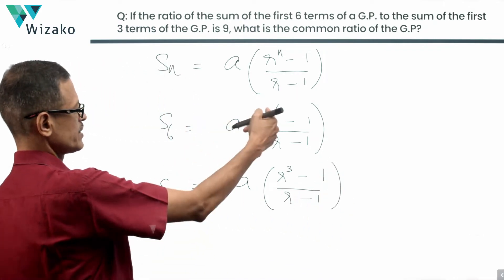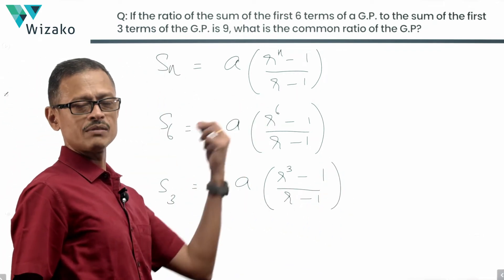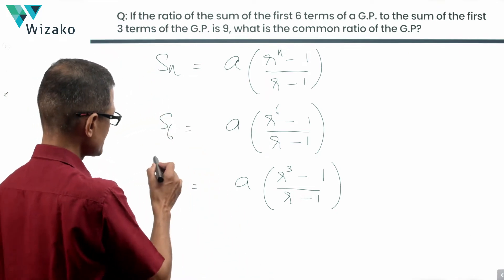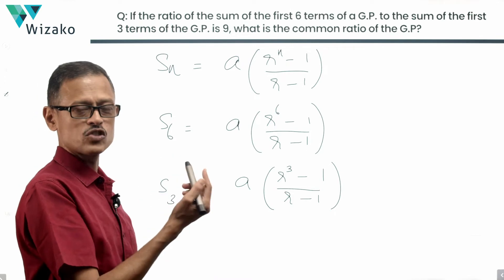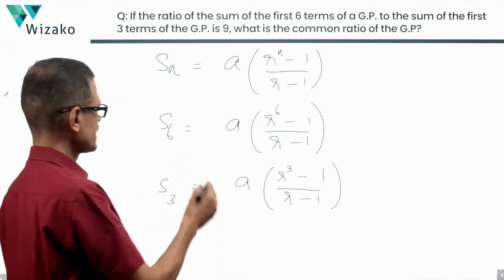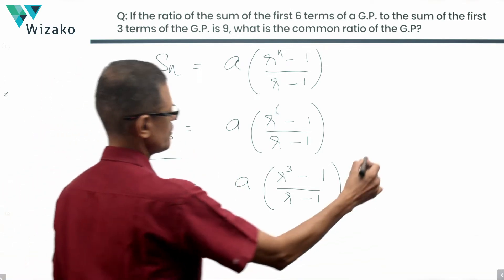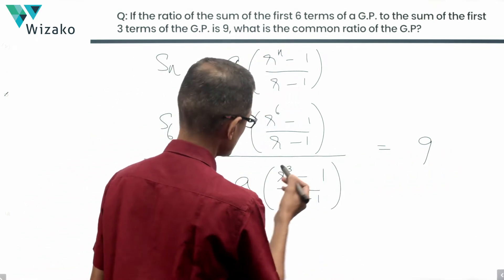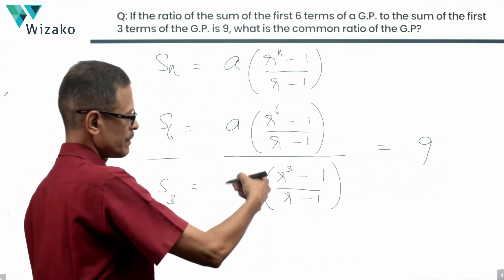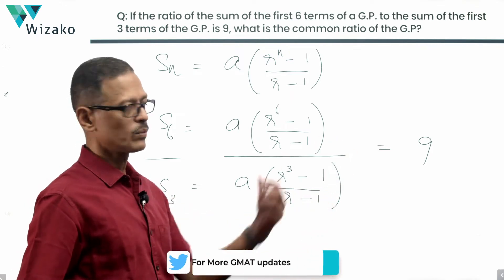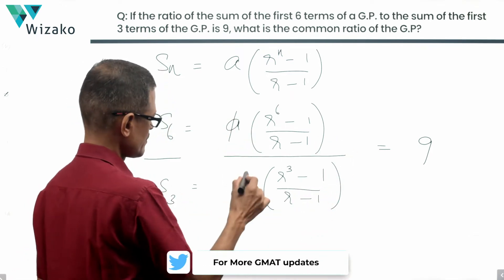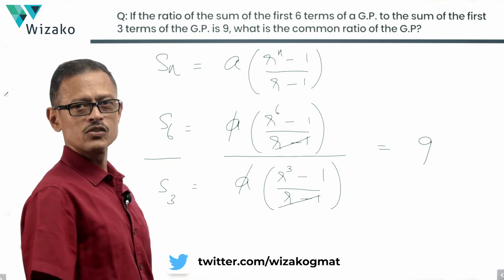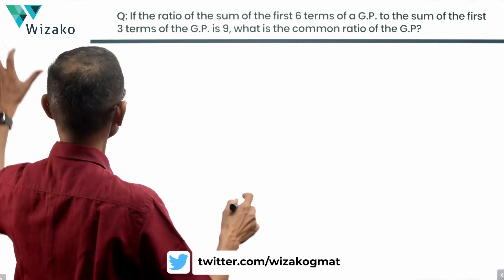Since a is the first term and r is the common ratio we need to find, and S6 to S3 equals 9 to 1, meaning S6 divided by S3 equals 9: the a terms cancel and the (r minus 1) in both denominators cancel, leaving (r to the power of 6 minus 1) divided by (r cubed minus 1) equals 9.